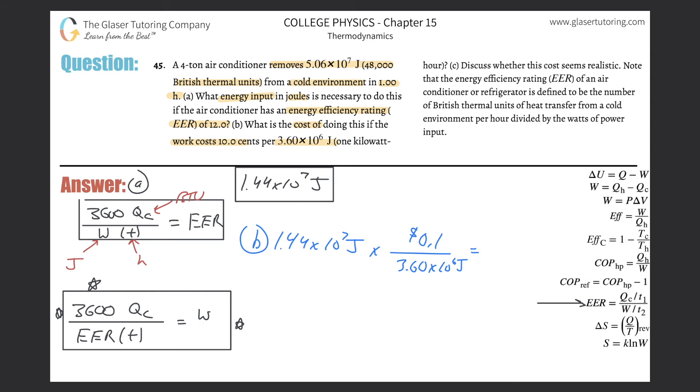And we can just multiply this on out. So, times 0.1 divided by 3.6 times 10 to the 6th, and it's about 40 cents, 0.4. All right, so that's how much it's going to cost. What is the cost of doing this if the work costs 10 cents per that many joules? Yeah, that's good. All right, and then what do we have?